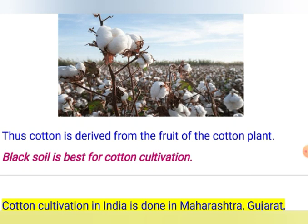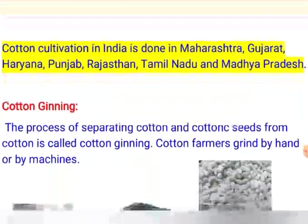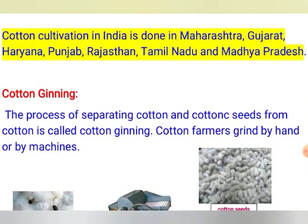The black soil is best for the cultivation of cotton plants. Cotton is cultivated in India in Madhya Pradesh, Maharashtra, Gujarat, Haryana, Punjab, Rajasthan, and Tamil Nadu. These are the states where cotton is cultivated.